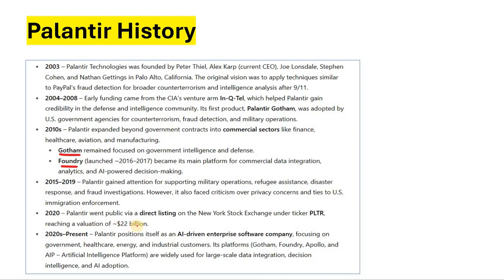When Palantir started focusing on AI-driven software, their stock spiked significantly. By 2020 onwards, Palantir positioned itself as an AI-driven enterprise software company. They offer several platforms: Gotham for military and defense, Foundry for commercial use, and Apollo and AIP (Artificial Intelligence Platform), which are very high in demand right now.